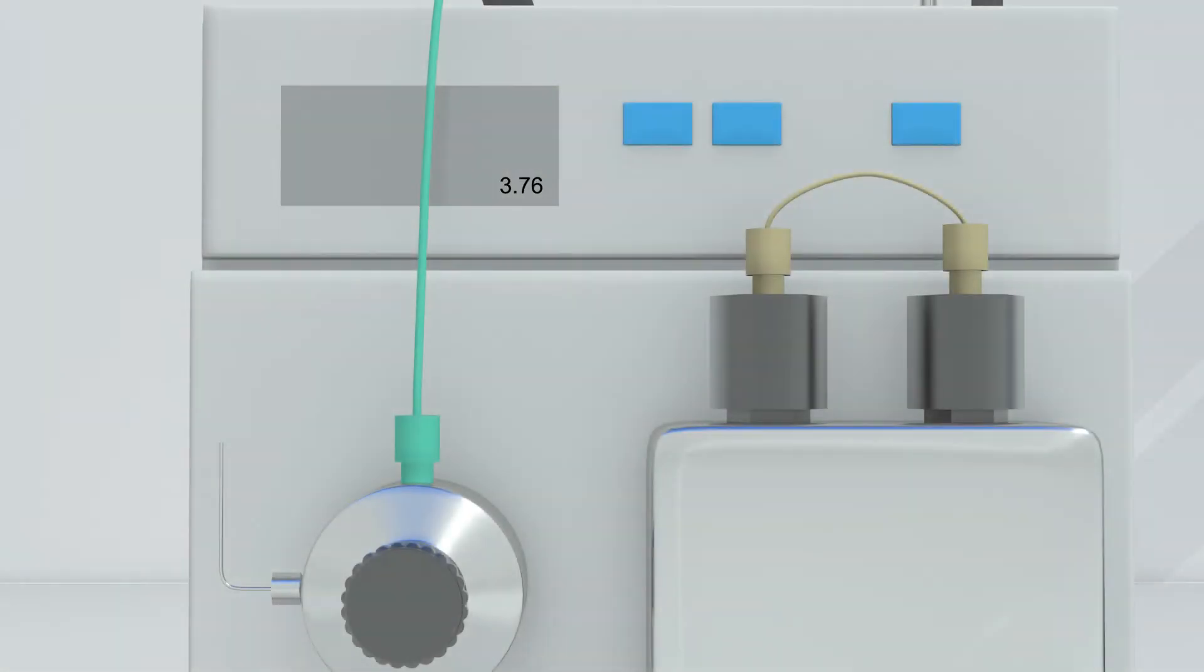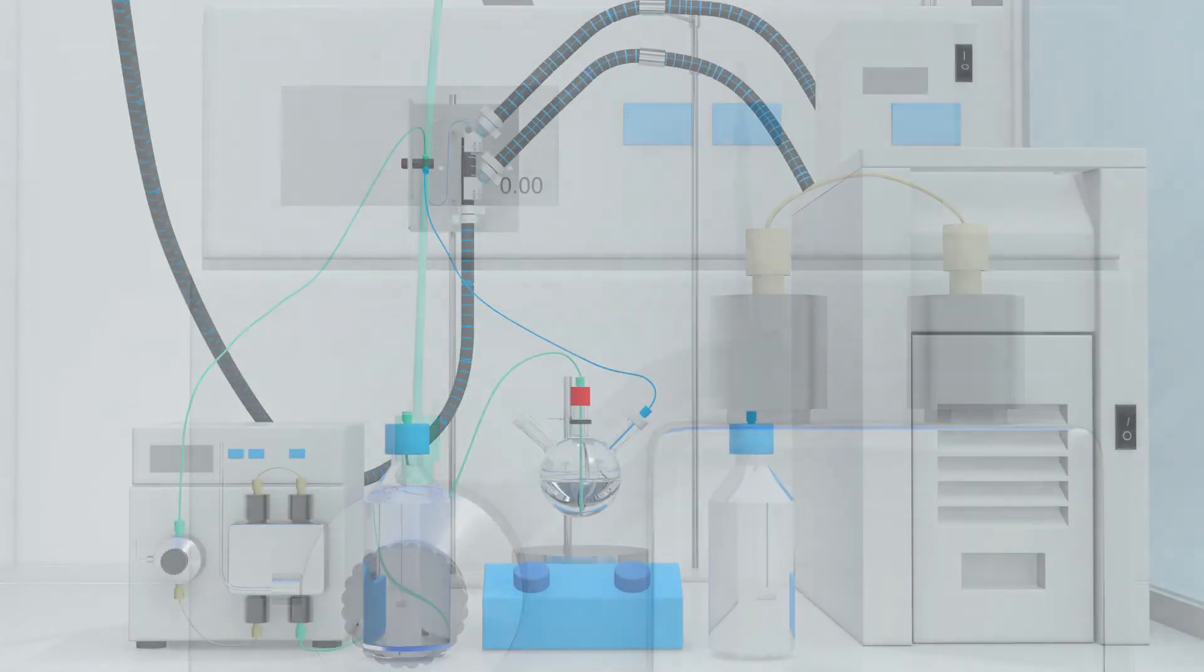This part of the presentation shows how to remove the flow tube assembly from the magnet once an experiment has been completed. Firstly switch the sample flow to OFF. Then disconnect the inlet from the reactor.